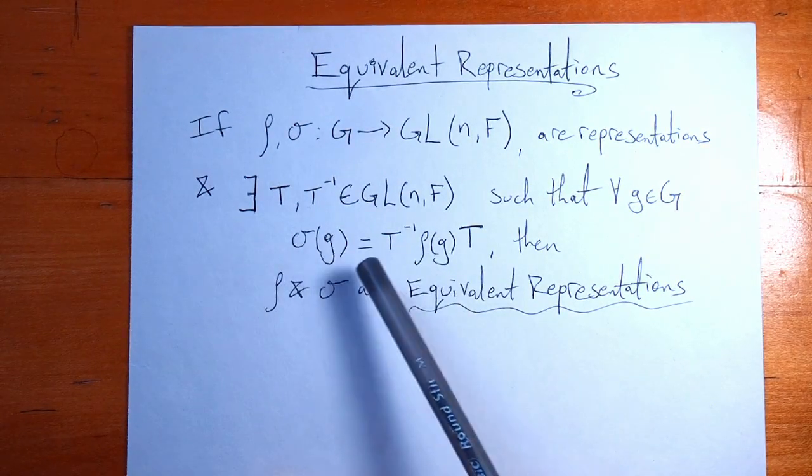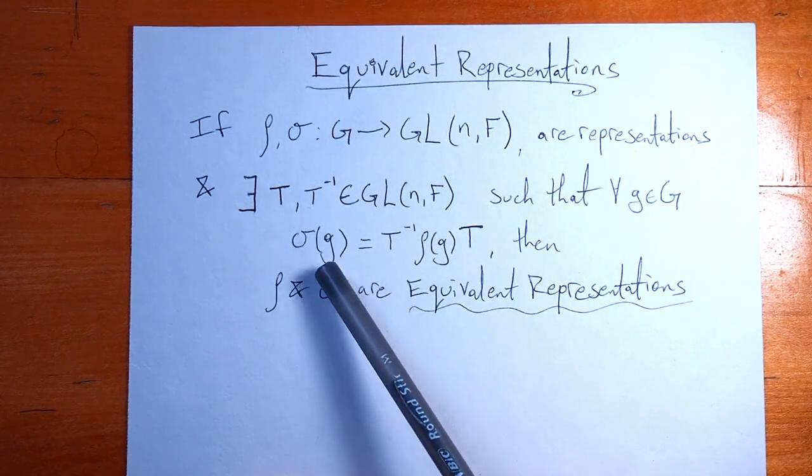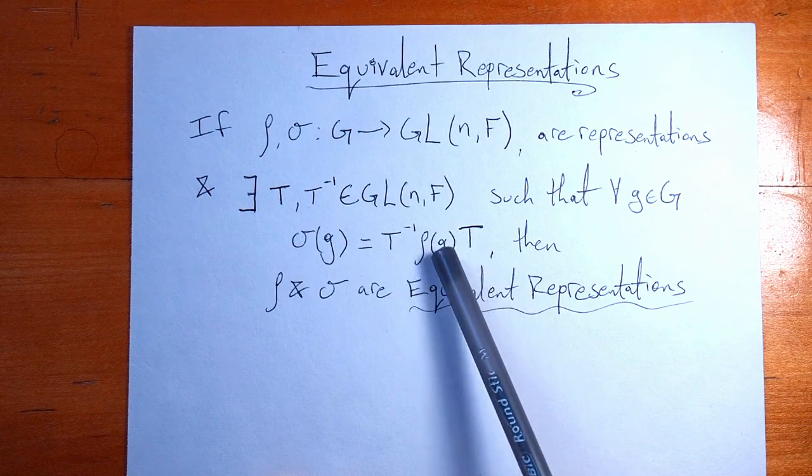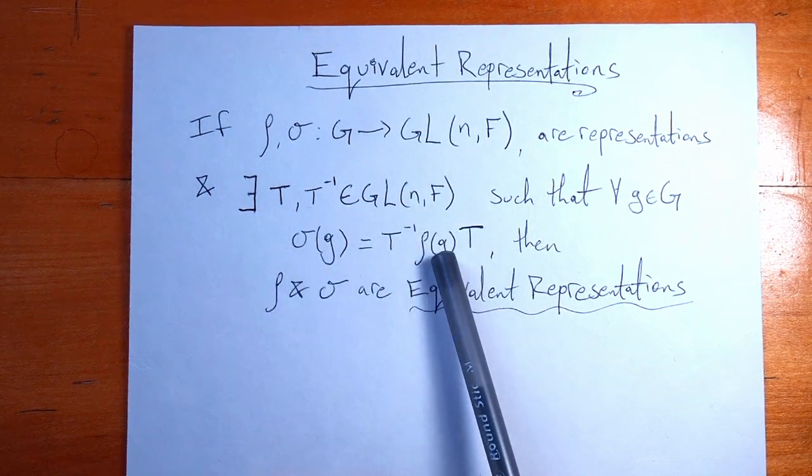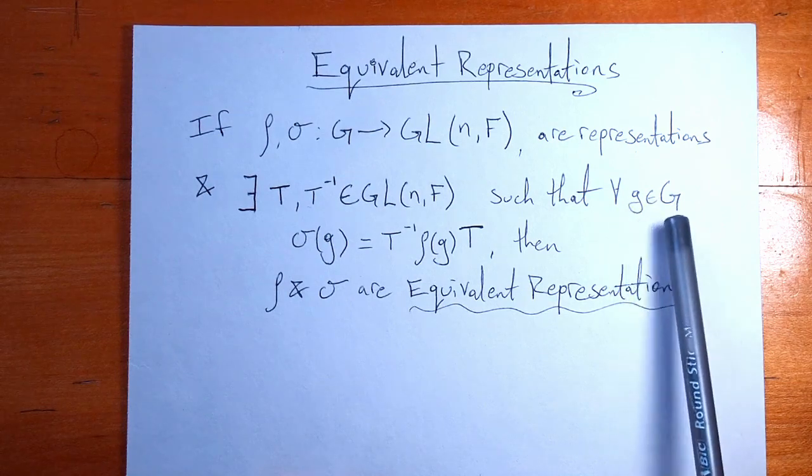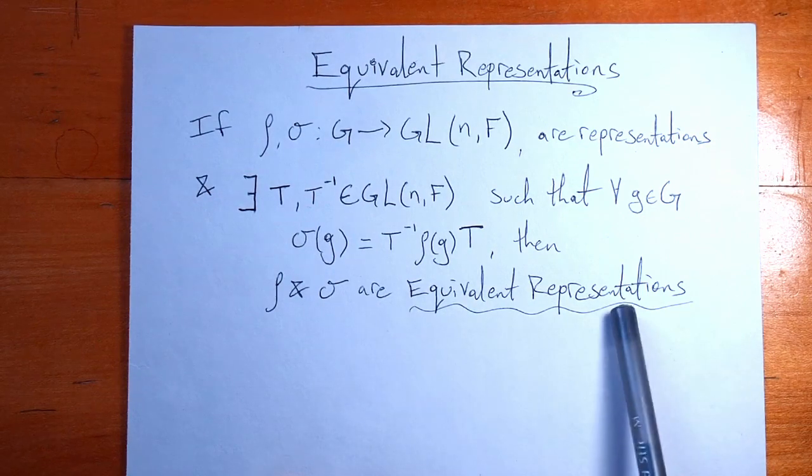These maps take group elements and spit out matrices. We should be thinking of this as a matrix and this as a matrix. This equation tells us when two matrices are similar. If these two matrices are similar for all elements of our group, all G in big G, then rho and sigma are equivalent representations.